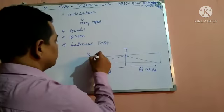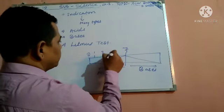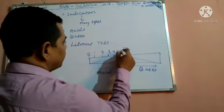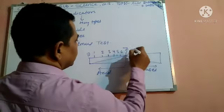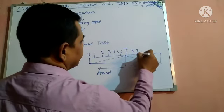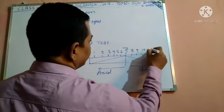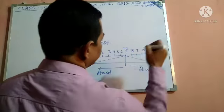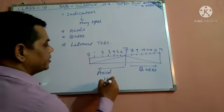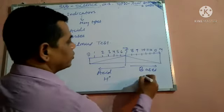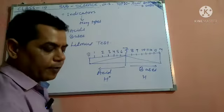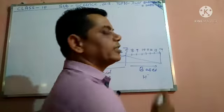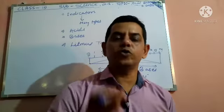So 1, 2, 3, 4, 5, 6, 7, 8, 9, 10, 11, 12, 13, and 14 — that level is the Power of Hydrogen. That is the Power of Hydrogen ion; that indicates the Power of Hydrogen.